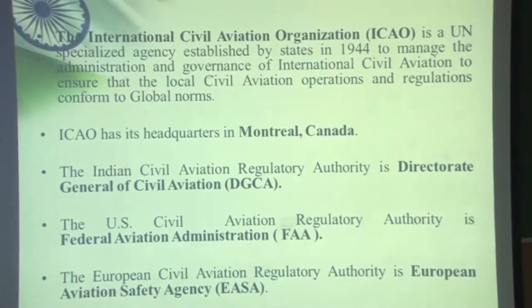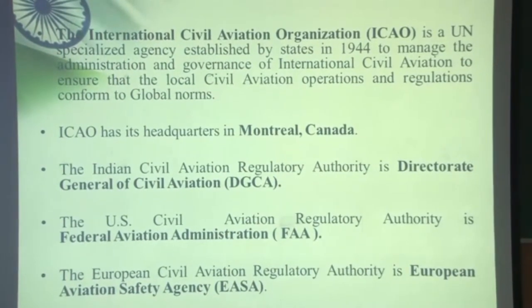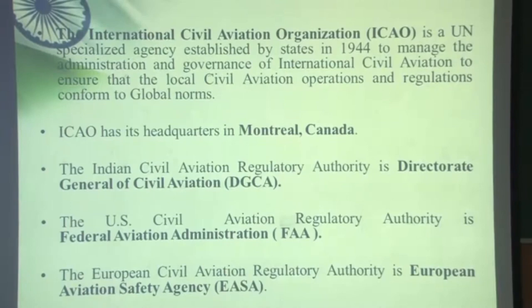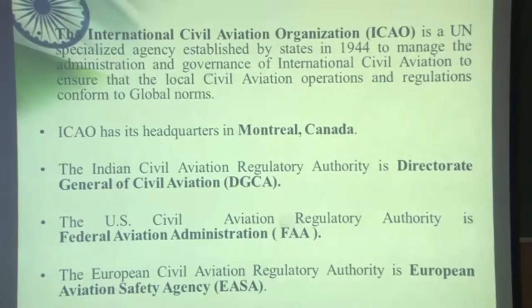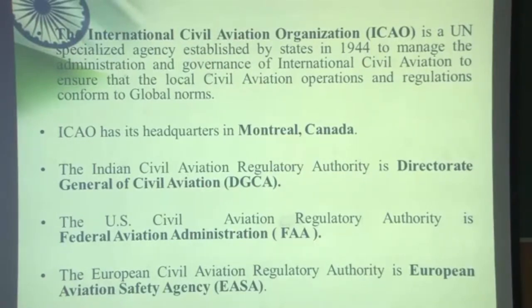In India, the Civil Aviation Regulatory Authority is the Directorate General of Civil Aviation, DGCA. In the US, the Civil Aviation Regulatory Authority is the Federal Aviation Administration, FAA. And in Europe, it is the European Aviation Safety Agency, EASA.